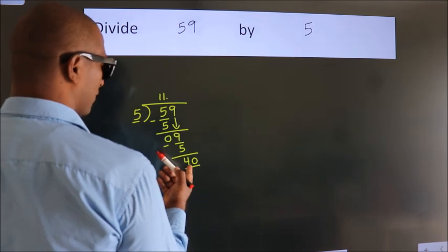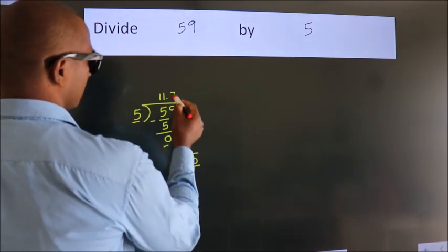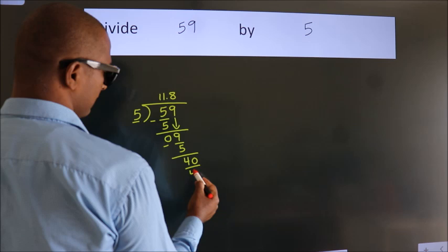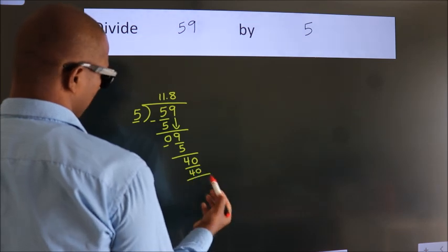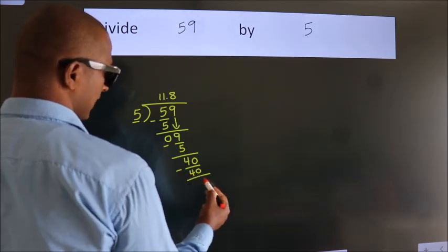When do we get 40? In the 5 table, 5 eights, 40. Now we subtract. We get 0.